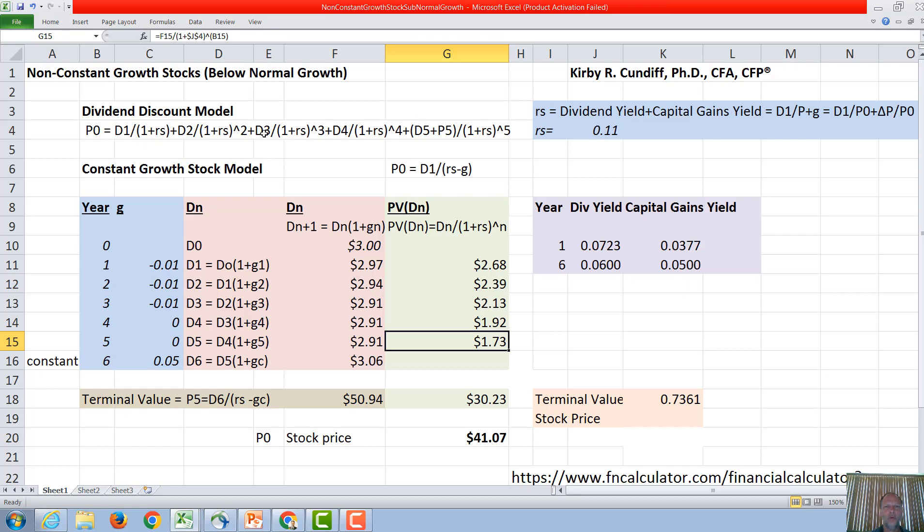We now have the present value of all the dividends, and we need the present value of the terminal value P5. So our terminal value P5 is the 50.94. We need to now take the 50.94, P5, divided by 1.11 to the fifth, which gives us $30.23 as our terminal value.